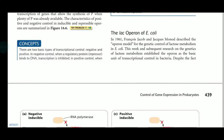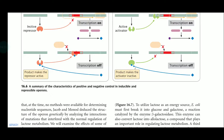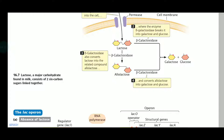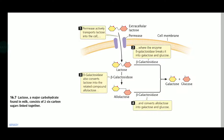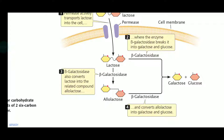This is the lac operon of E. coli — the negative inducible system. We are going to read about three kinds of enzymes: permease, acetyltransferase, and beta-galactosidase. Permease allows lactose to move through the membrane. Beta-galactosidase breaks lactose into galactose and glucose. The third enzyme, acetyltransferase, is required as part of the lactose-related metabolism.